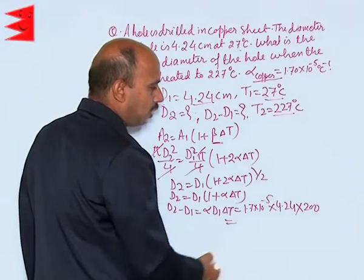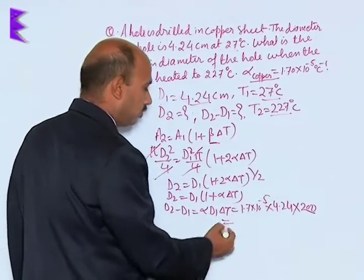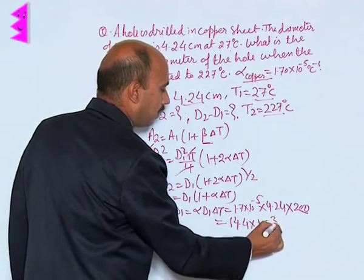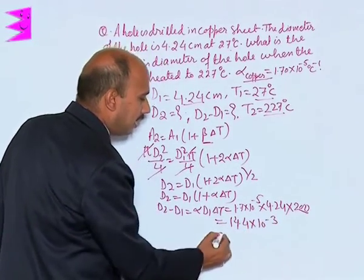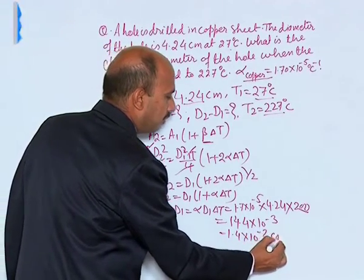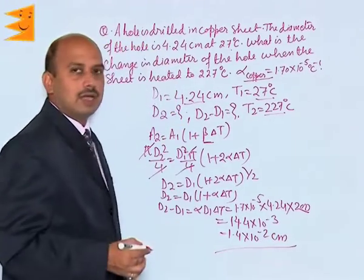If you multiply all these, these two zeros and two zeros here reduced, you will be getting 14.4 into 10 raised to power minus 3, and that can be written 1.4 into 10 raised to power minus 2 centimeter. So this is the change in the diameter.